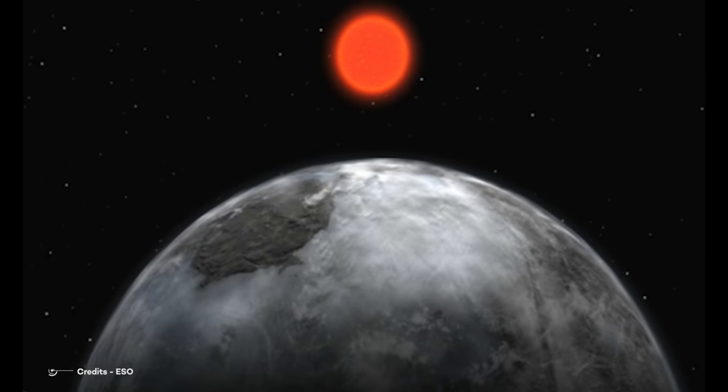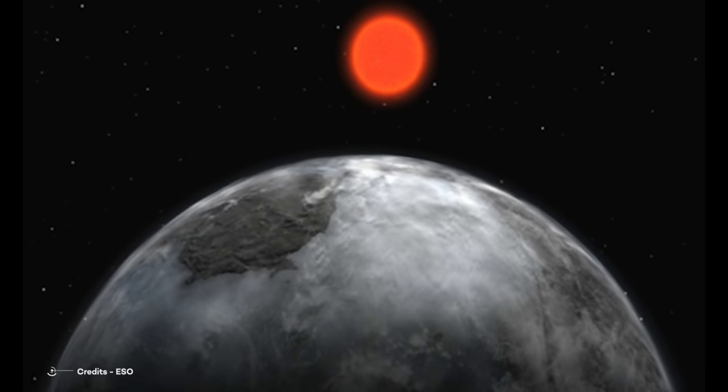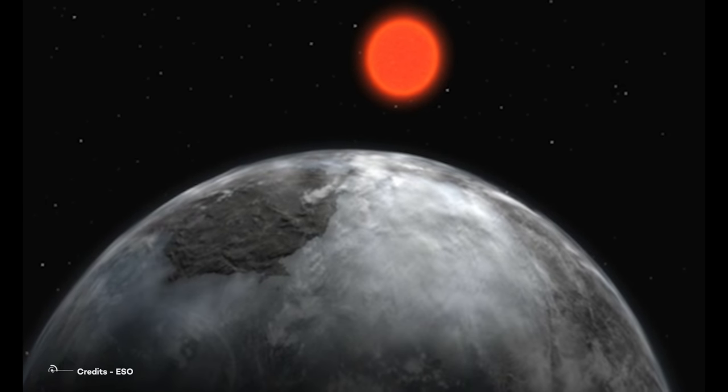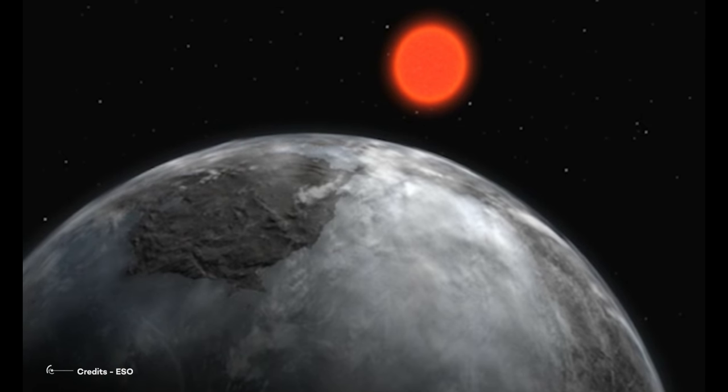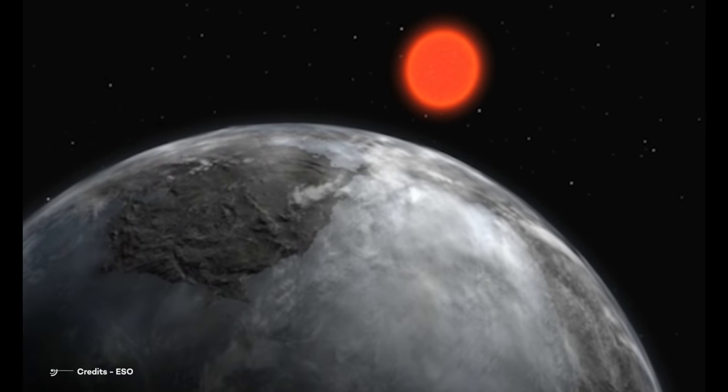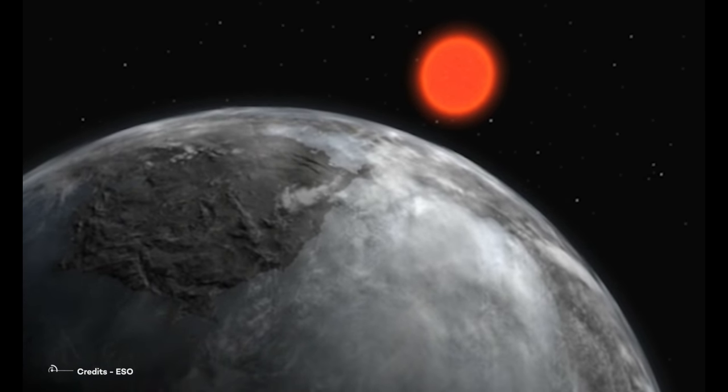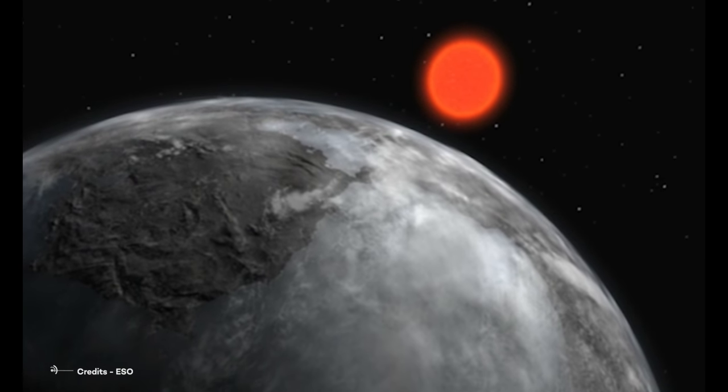However, the planet was called Gliese 581c because it was part of the Gliese 581 star system, i.e. it orbits around Gliese 581. As we said in the intro, Gliese 581 is a red dwarf star that lies about 20 light years away from us.